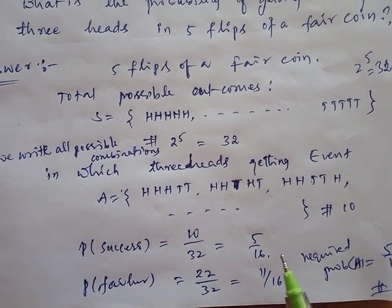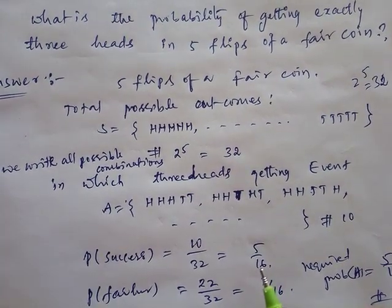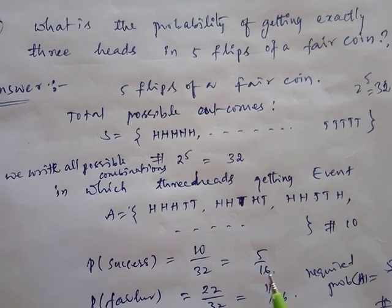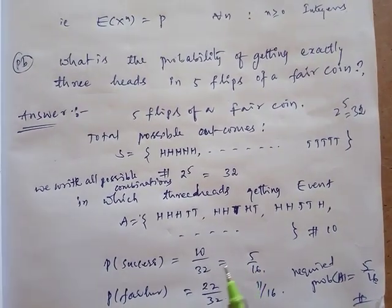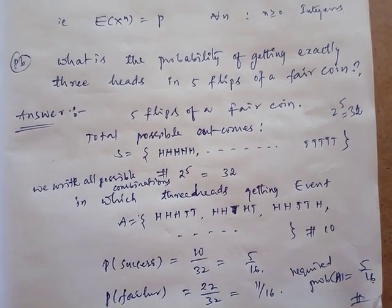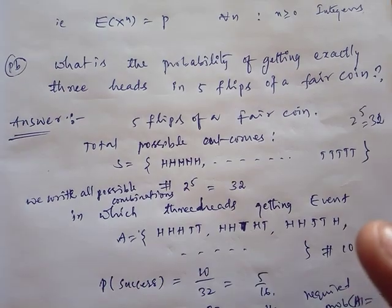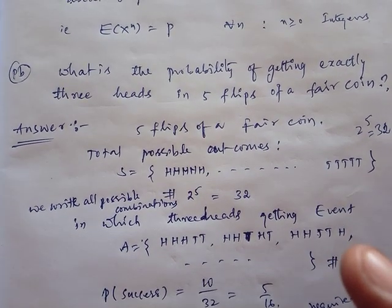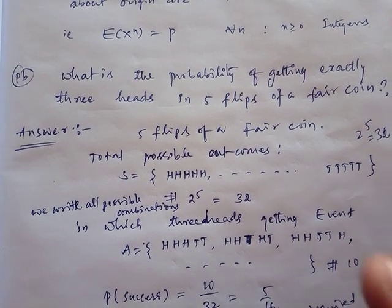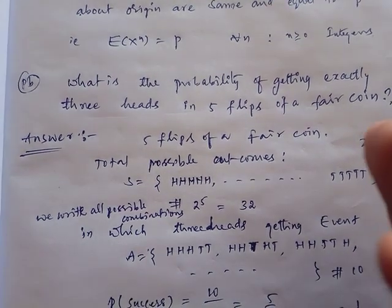This is the procedure to determine the probability density function of the Bernoulli random variable, along with the mean, variance, and moment generating function. For any random variable, if the probability density function is given, the mean, variance, and moment generating function can all be determined similarly.